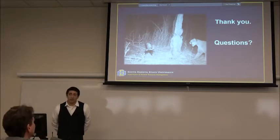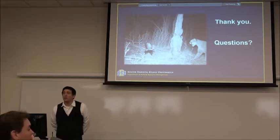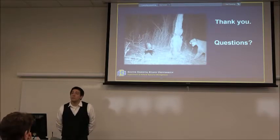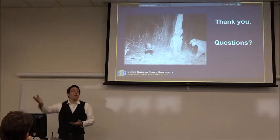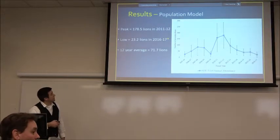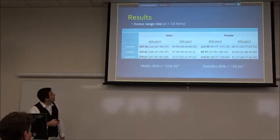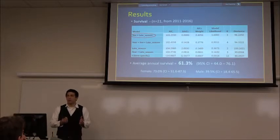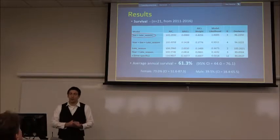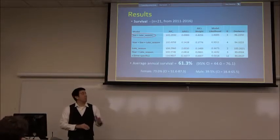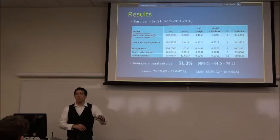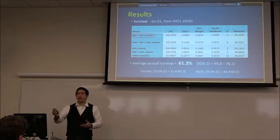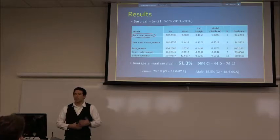A question was raised about the late-season survival variable. The late season — essentially December — is when hound hunting is permitted, which is the most efficient hunting method. Most harvested lions are taken during that month. Rather than pulling out a separate survival estimate for that one month, it was kept as a model variable because it clearly relates to that hunting period.